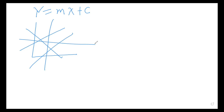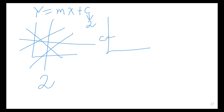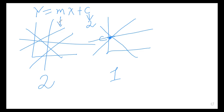For y equals mx plus c, if I put no constraint on m or c, I can draw infinite lines — so degrees of freedom is two. If I fix c to be 2, all lines must pass through that intercept point, so degrees of freedom becomes one. If I also fix m to 1, I can draw only one line — degrees of freedom becomes zero.